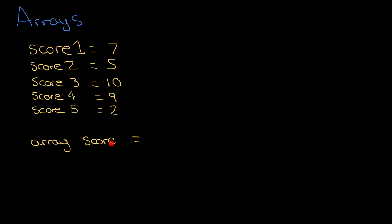I can go array score equals, and I could just do this straight away: seven, five, ten, nine, and two. That accomplishes the same in one line as all this does up here. If I had more scores to deal with, it gets even better. Let's say I want to access the fourth score in the array, this one here.